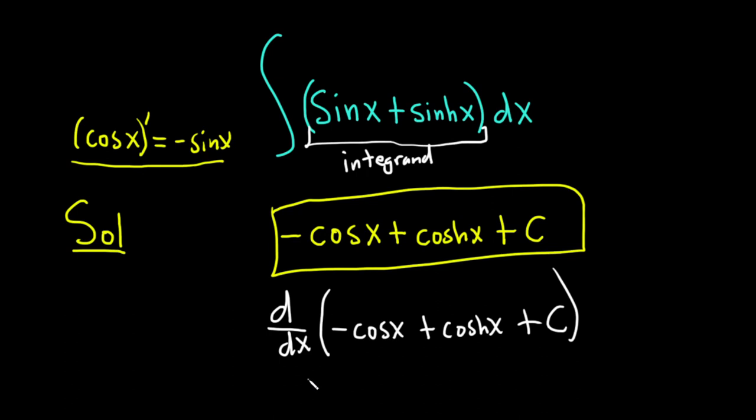So differentiating this, derivative of cos is negative sin. So we get negative negative sin. Derivative of cosh is sinh. And then the derivative of c is 0, so it goes away. So we get sin x plus sinh x, which is the integrand in the original problem.